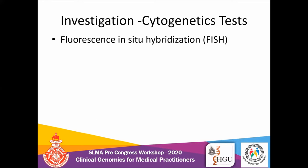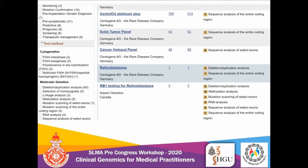Cytogenetic testing such as fluorescence in situ hybridization, or FISH, can also be performed for retinoblastoma. Some tests are available locally and some abroad. Using the NCBI Genetic Test Registry site, you can identify appropriate labs. For example, a Canadian lab may offer deletion duplication analysis, methylation analysis, RNA analysis, and sequencing, while a lab in Germany may offer sequencing analysis of selected exons. You can review each lab to see whether it meets your requirements.